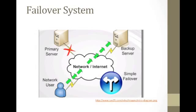So basically, when the user can't get to its primary source — in this case we're talking about the internet, as shown in this diagram — when it can't get to its primary server or source of content, the technology's going to relay it over to the backup server or backup source, which is our failover system, so that the user can continue to do what they do or get the information that they want.